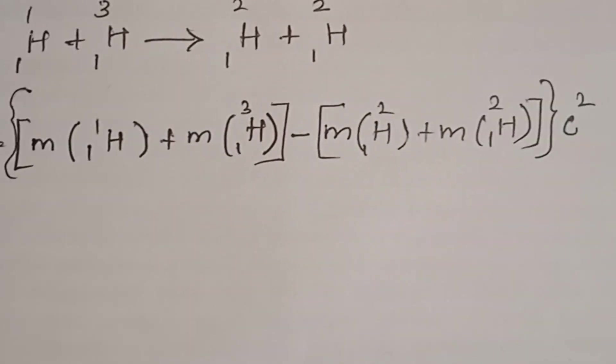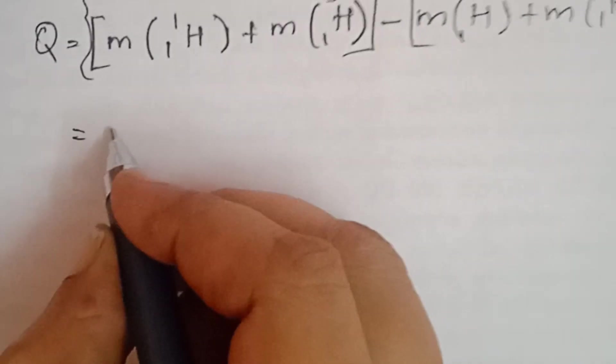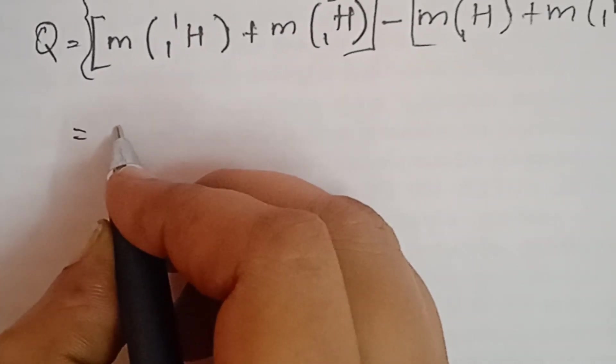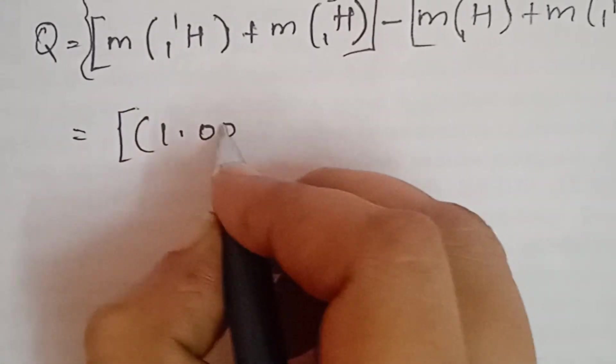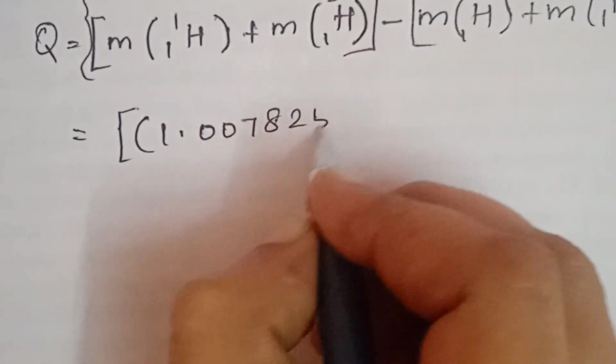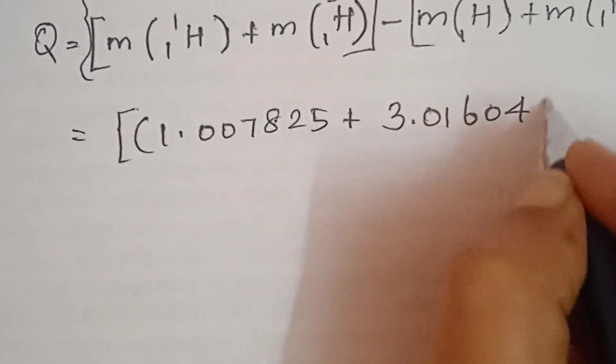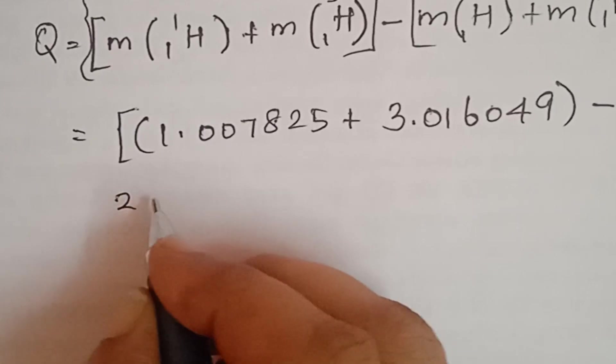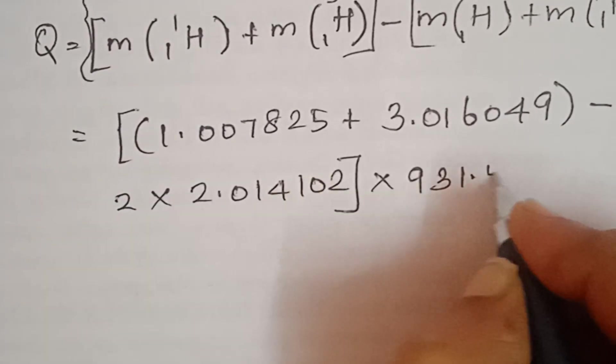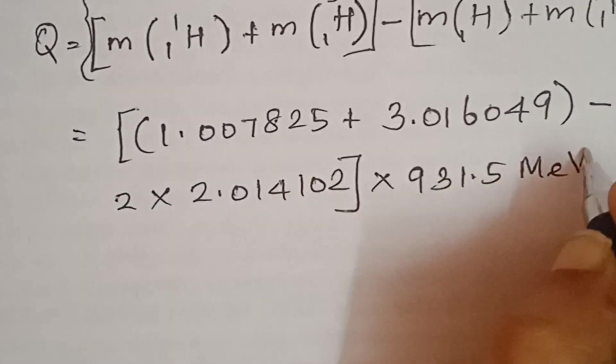Delta M c squared equals 1.007825 plus 3.016049 minus 2 times 2.014102, times 931.5 million electron volts.